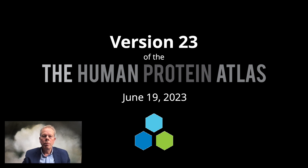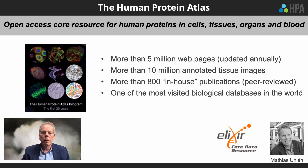A warm welcome to the launch video of version 23 of the Human Protein Atlas. The Human Protein Atlas is an open access core resource for human proteins and cells, tissues, organs and blood. It contains more than 5 million web pages, updated annually, and also contains more than 10 million annotated tissue images. It is one of the most visited biological databases in the world.